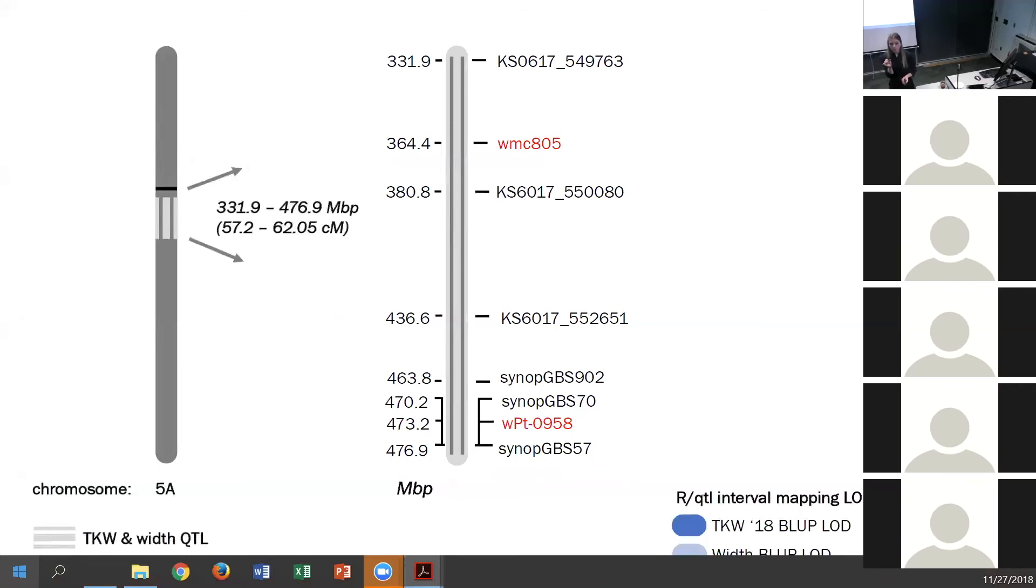Our QTL then provides us with a LOD score or logarithm of odds, which is a measurement of significance between a genetic marker and a physical trait that we've measured. Here in dark blue, we have across this 140 megabase pair region, the LOD score significance values for thousand kernel weight, and in light blue, that's going to be for the width measurements, and consistently we break our threshold significance level of 3.